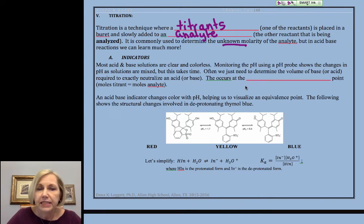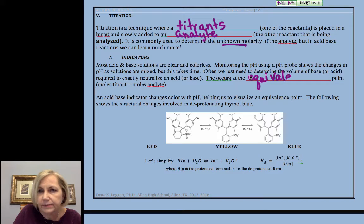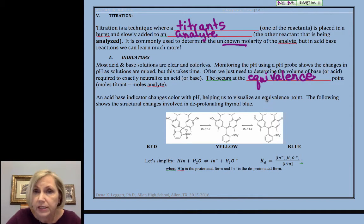Now, with acids and bases, what we want to do is add acid and base until it's exactly neutralized, often until one of the H-pluses is neutralized if it's polyprotic. And this is called the equivalence point. At the equivalence point, we have exactly neutralized the acid and the base. Moles of titrant equals moles of analyte.